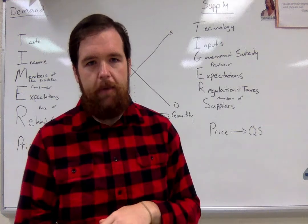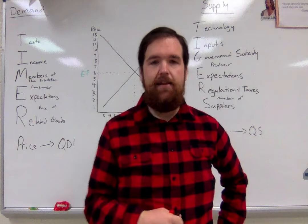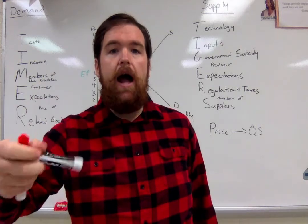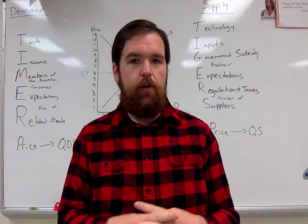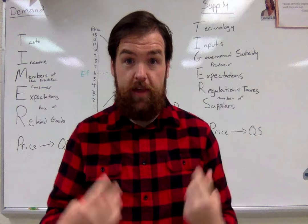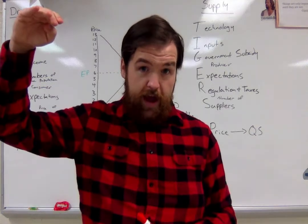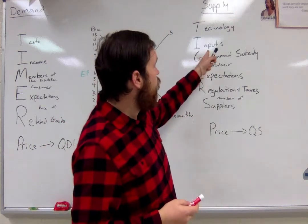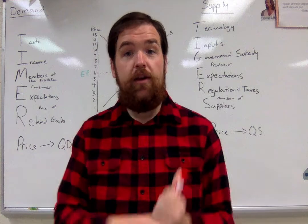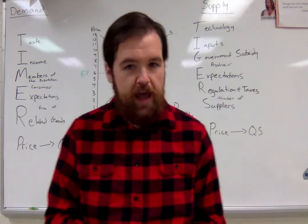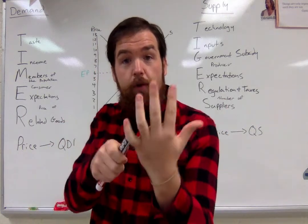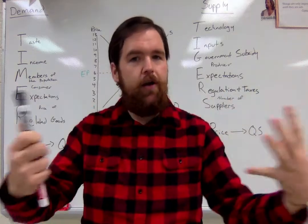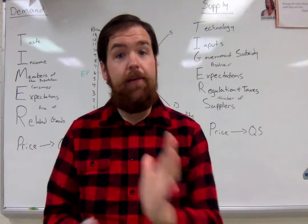The first is technology. Advances in technology will increase supply. During this COVID-19 pandemic, if we didn't have Chromebooks and laptops, the supply of assignments and educational material would have plummeted. But because we have Chromebooks, it has gone up. Next is the cost of inputs — the things that go into making a good or service. For a Chick-fil-A sandwich you need bread, lettuce, tomato, pickles, chicken. If the cost of any of those five things changes, supply will change. So if it becomes more expensive to purchase chicken, it's more expensive to make that sandwich, producers are going to make less, and supply goes down.